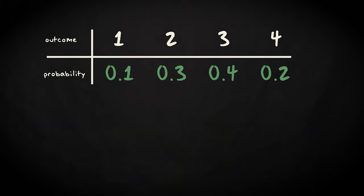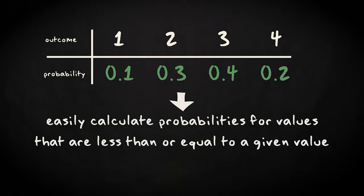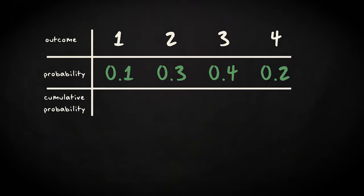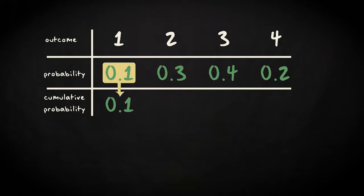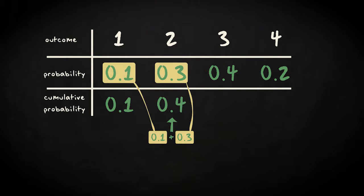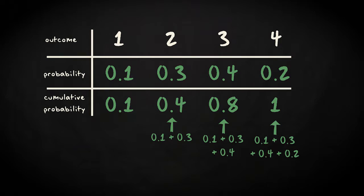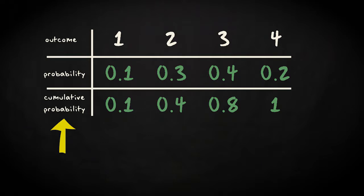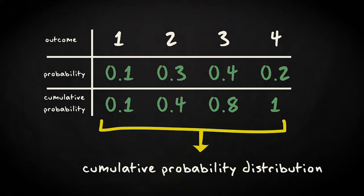Now let's step up to a next idea. Based on a probability distribution, we can easily calculate probabilities for values that are less than or equal to a given value. For example, the probability that x is less than or equal to 1 is 0.1. The probability that x is less than or equal to 2 is 0.1 plus 0.3, which is 0.4, etc. The resulting probabilities are called cumulative probabilities, and the list of all cumulative probabilities is called a cumulative probability distribution, or cumulative distribution function.